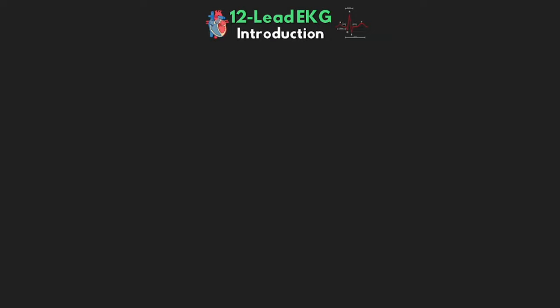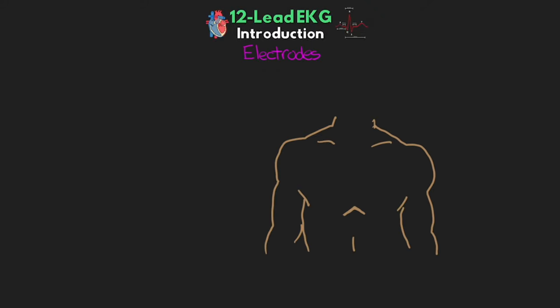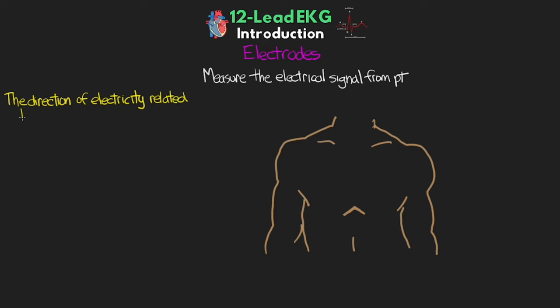Let's move on and talk about the EKG system and the different parts of how it all works. First, we have our electrodes — these measure the electrical signals and are the little stickies that we put on the patient. From there, we hook up the wires or leads to those electrodes. We have positive and negative leads — something we call bipolar, which can be both positive or negative depending on how we're using them — as well as a series of positive leads.